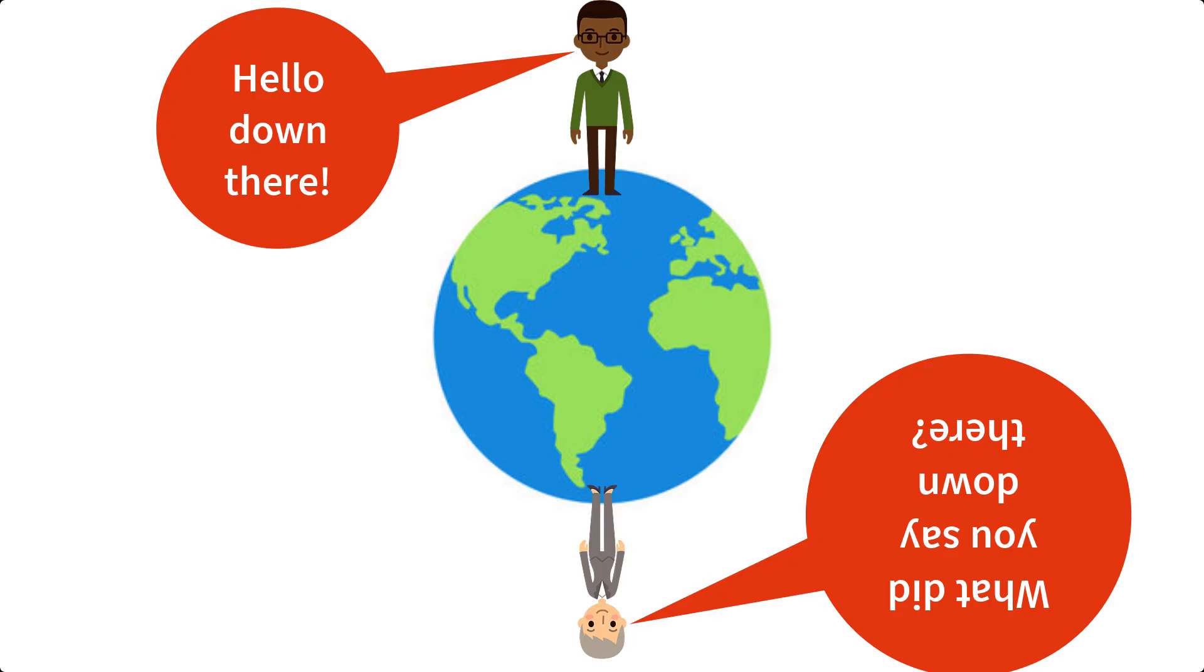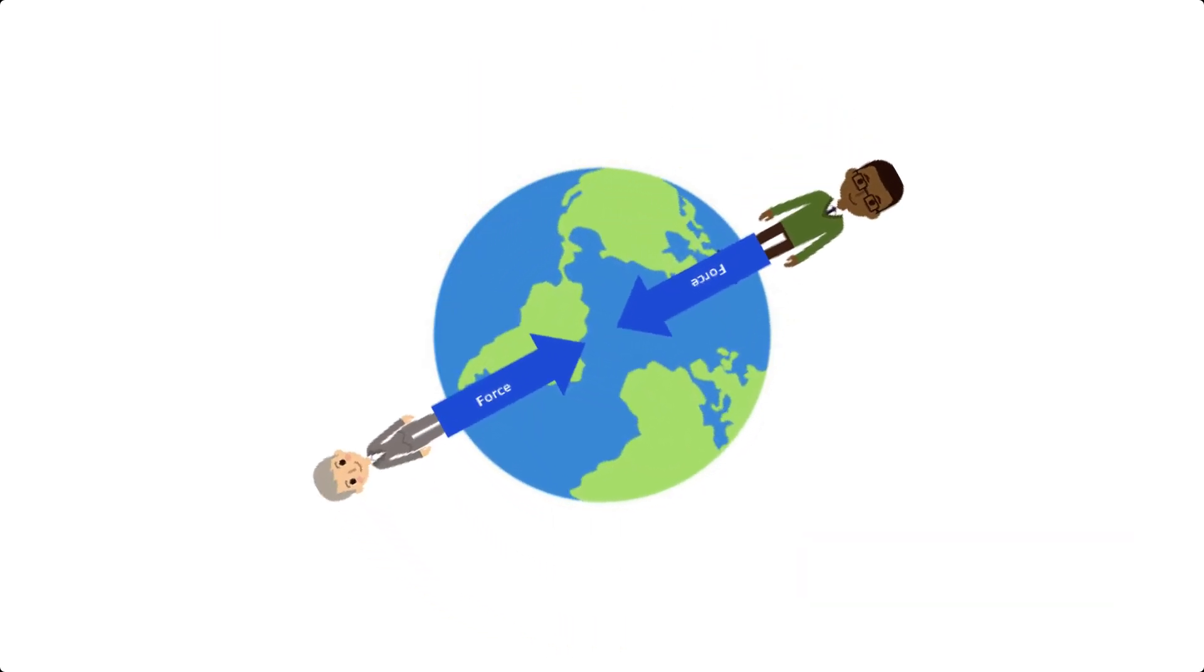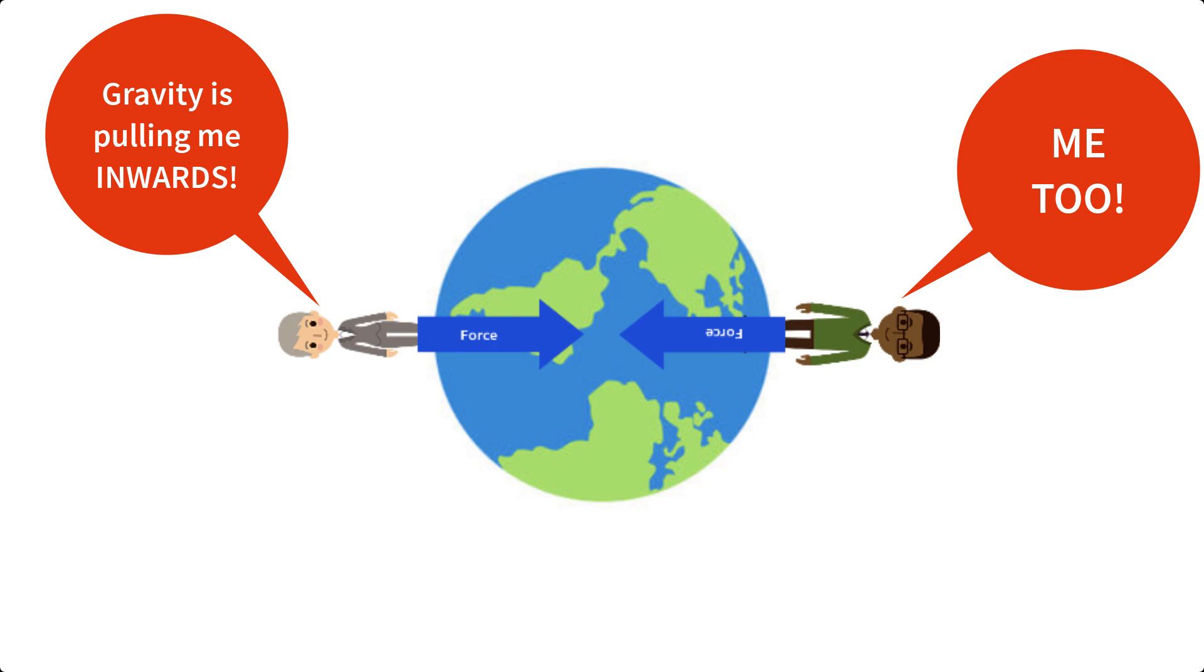And that's an important thing to wrap your head around as we figure out orbits. What you think is down on Earth is very different than what somebody else might think down is on Earth. But one thing you can both agree upon is that gravity is pulling you inwards towards the center of Earth. So we know that no matter what we do gravity is going to be pulling things towards the planet. So how do we get an orbit from this?